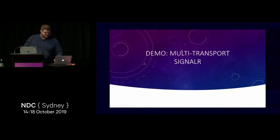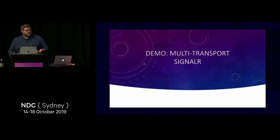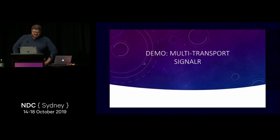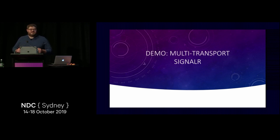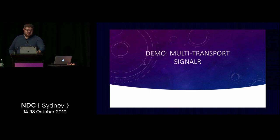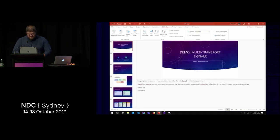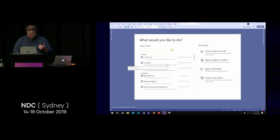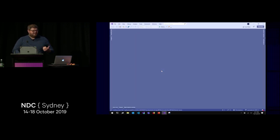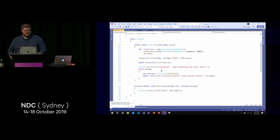Now I want to show you a quick demo. Hopefully people here have heard of SignalR — if you haven't, SignalR is a real-time two-way communication protocol. Primarily it's used in browsers with WebSockets. That means you can use it to build a chat application. I'm going to show you my great chat application — that's what everybody does first with SignalR — and then we'll get a little bit weird with it.